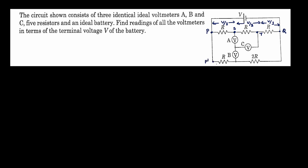Suppose if I name this as P dash, this as S dash, this as Q dash. Correspondingly, we can say the voltage drop between P dash to S dash as V by three, voltage drop V by three. And from this point S dash all the way to Q dash, the voltage drop is going to be two V by three. So this is from your voltage divider rule, ignoring the effect of all the voltmeters.